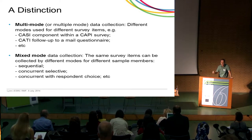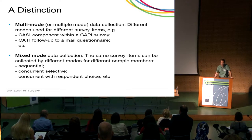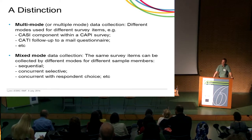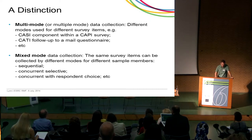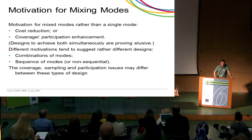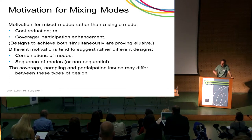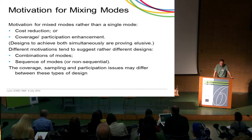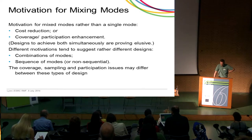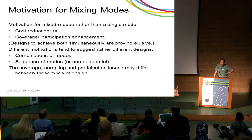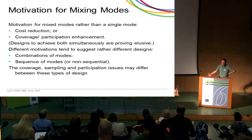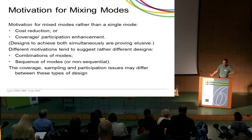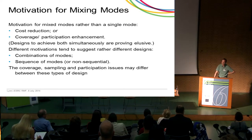That distinction is very clear for the second and third presentations today — they're obviously about mixed-mode data collection. The distinction is less clear for my topic of coverage and sampling. From the research carried out so far, the two main motivations for mixed-mode designs seem to be either reducing costs compared to some single-mode alternative, or trying to improve coverage or participation in the survey, and those two seem to be somewhat orthogonal to one another.